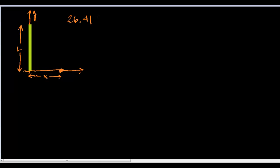We have a 3-star problem here, problem 26.41, asking us to find the electric field at point P, which is created by a line charge on the y-axis. The way we're going to set this up is we'll take a little slice called dy.